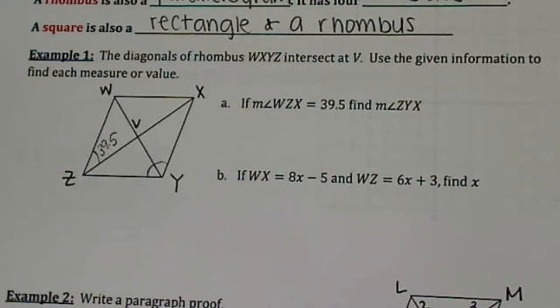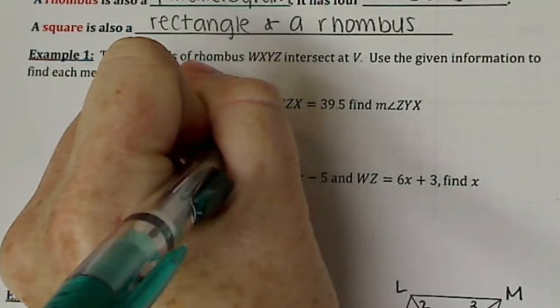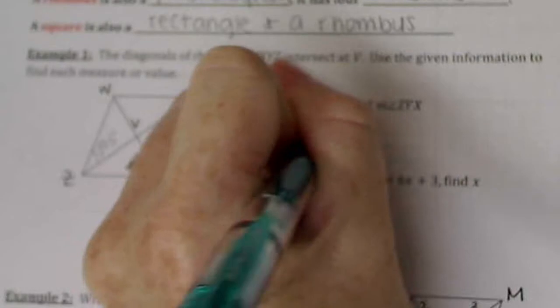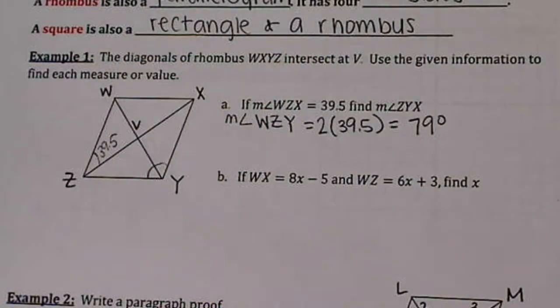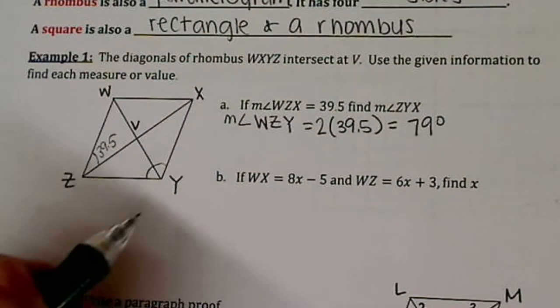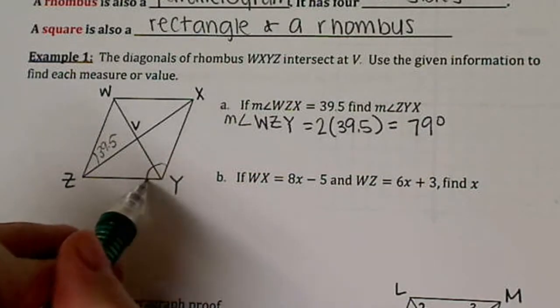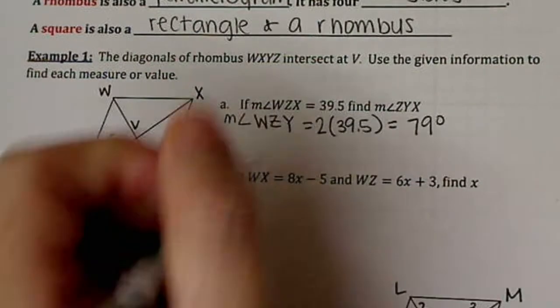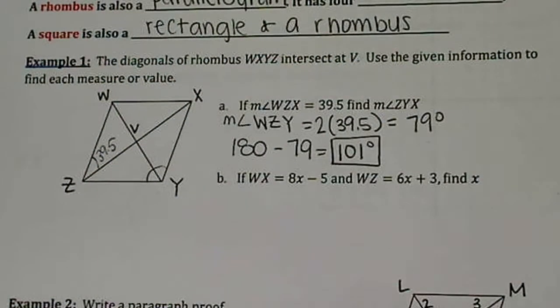One of the things that we know is that the diagonals bisect your angle. So the measure of angle WZY is twice the measure we are given, which is 79 degrees. We need to know that because, if you remember, consecutive interior angles of a parallelogram add up to 180. So to find this big angle over here, ZYX, we need to subtract 79 degrees from 180. That's the measure of angle ZYX, 101 degrees.